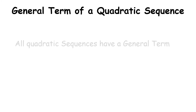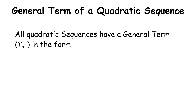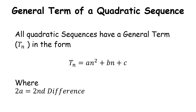Now let's talk about the general term of a quadratic sequence. All quadratic sequences have a general term Tn in the form: Tn = An² + Bn + C, where 2A is equal to the second difference. This is a really important piece of information — without remembering this you will struggle to work out your general term. This formula appears on the exam paper, so it's important to remember both the formula and that 2A equals the second difference.